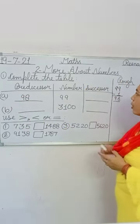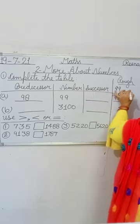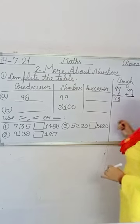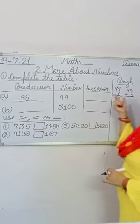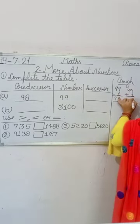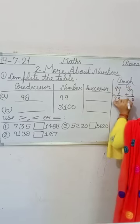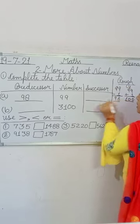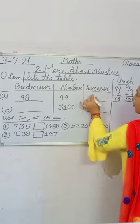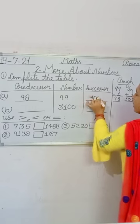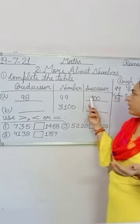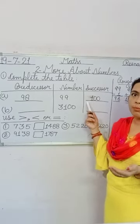Now for the successor number, we add one to the given number. The given number is 99, so 99 plus 1: 9 plus 1 is 10, write 0 carry 1; 9 plus 1 is 10, so the successor number of 99 is 100. We also know that after 99, 100 comes.